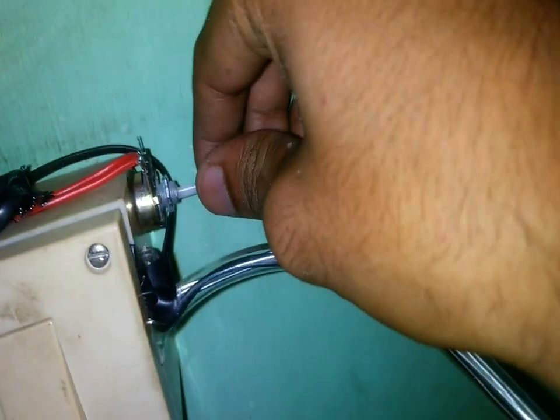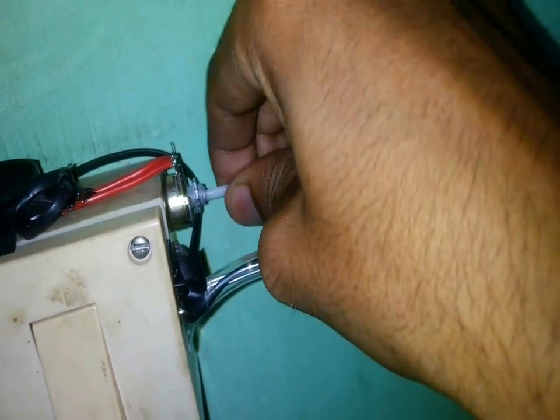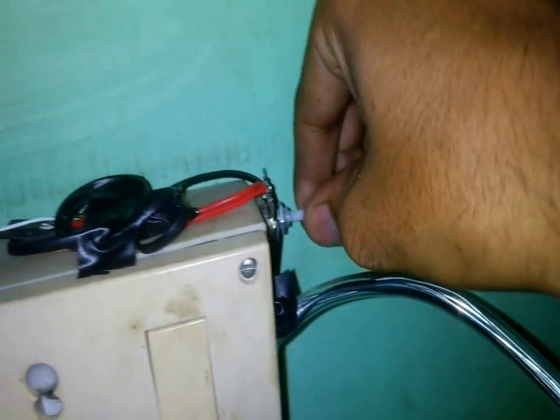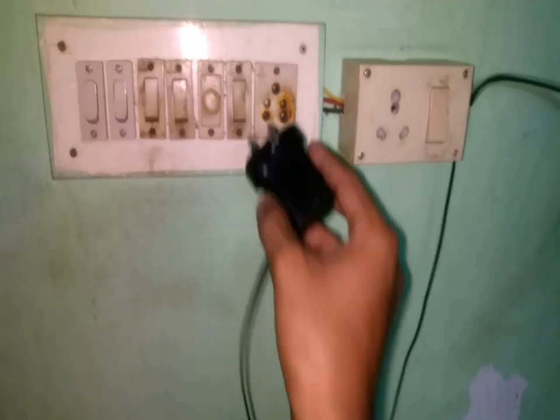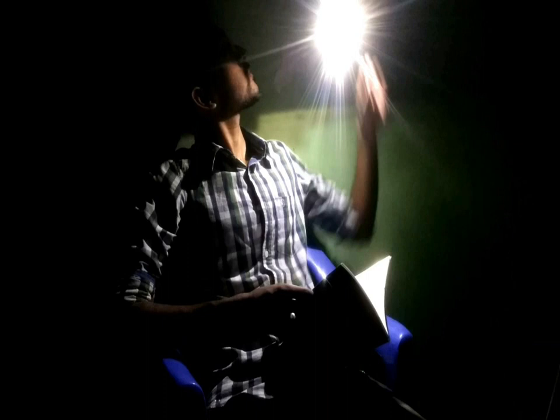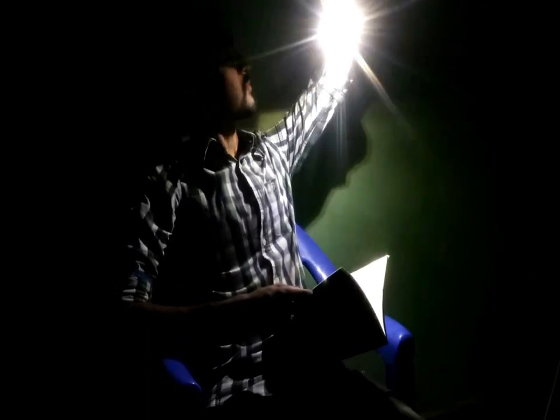I have stuck the potentiometer and the circuit to the switchboard itself. Now the steady light is ready. Just adjust the light, plug in the charger, adjust the brightness, and start reading your favorite book.